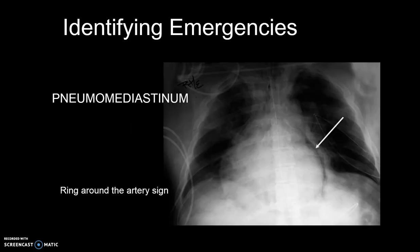Pneumomediastinum is the presence of extra-luminal gas within the mediastinum. Gas may originate from the lungs, trachea, central bronchi, esophagus, and tract from the mediastinum to the neck or abdomen, and commonly occurs from trauma. Among other indications, notice the presence of the ring around the artery sign.